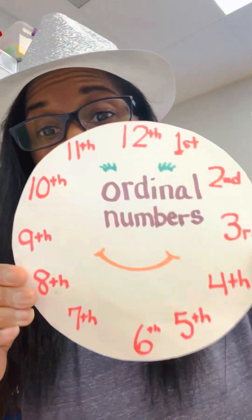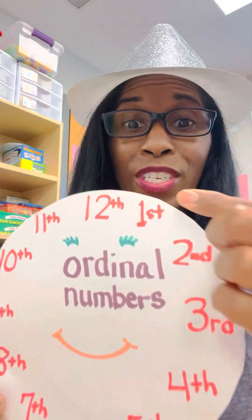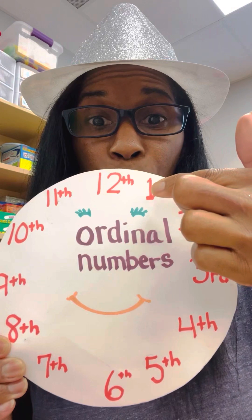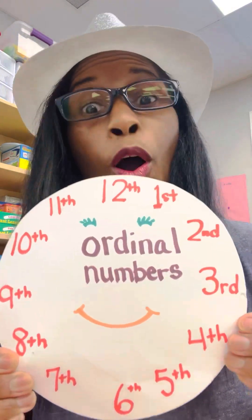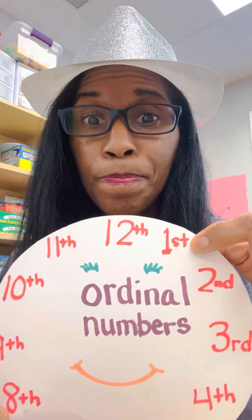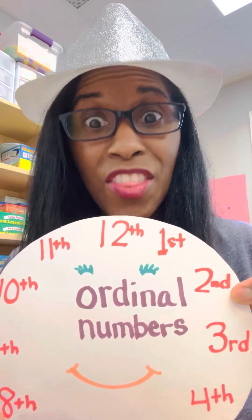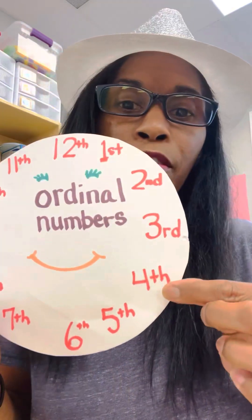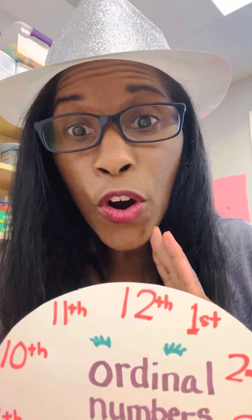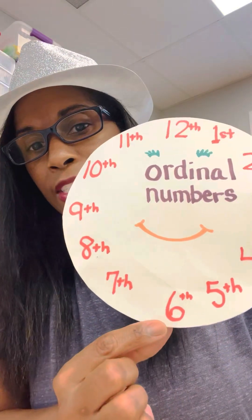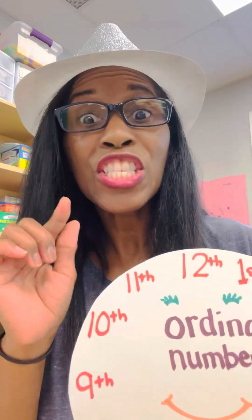All right, are you ready? Hope you like my little song. Here is our chart with our ordinal numbers and we're going to just count around. I'm going to show you the letters from the first letter to the 12th letter. We have number one and that would be the first. We have two and that would be the second. We have three and that will be the third. We have four and that will be the fourth. We have five and that would be the fifth. We have six and that would be the sixth.